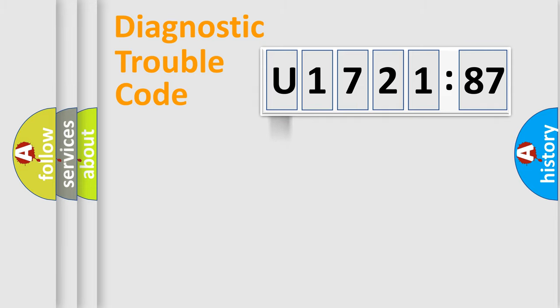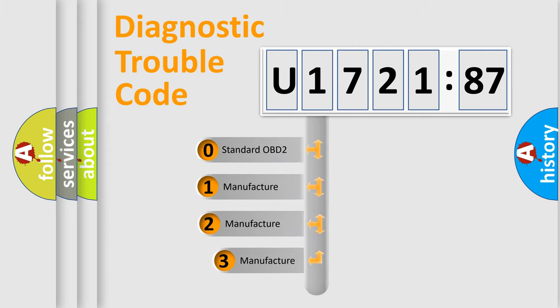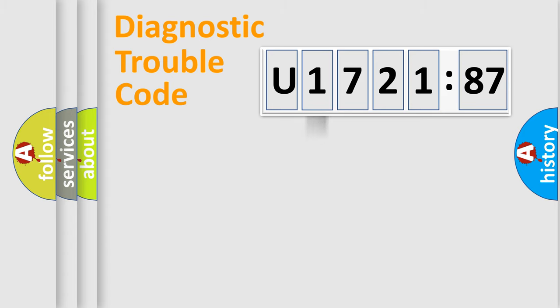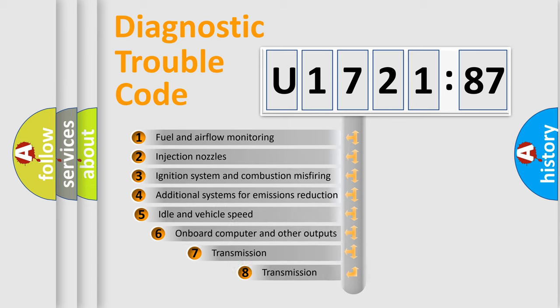Powertrain, Body, Chassis, Network. This distribution is defined in the first character code. If the second character is expressed as zero, it is a standardized error. In the case of numbers 1, 2, 3, it is a manufacturer-specific expression of the car-specific error.